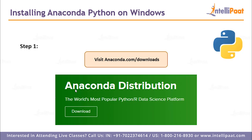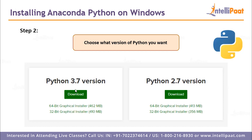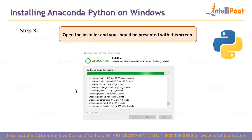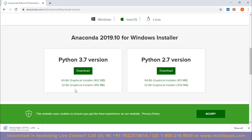So step one is simple — go to their website. As you can see, it says it's the world's most popular Python and R data science platform. Step two: you can install Python 3.7 or Python 2.7 as per your requirement. In my particular case, I'm downloading the 3.7 version. As soon as it downloads, we can run it.